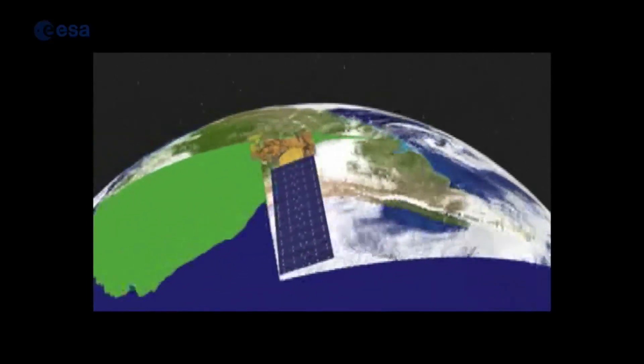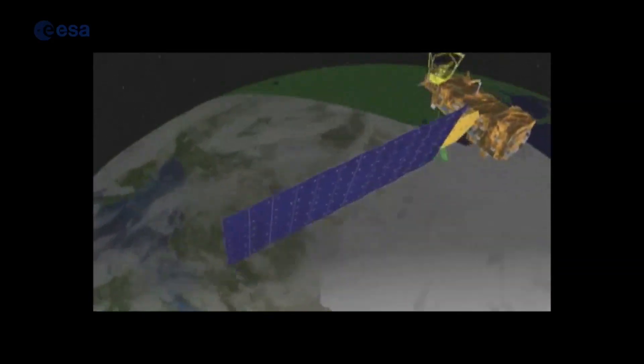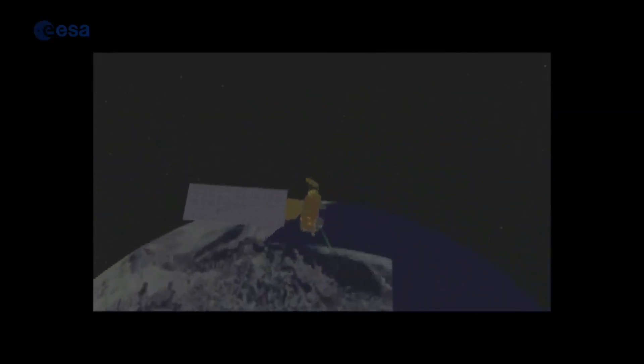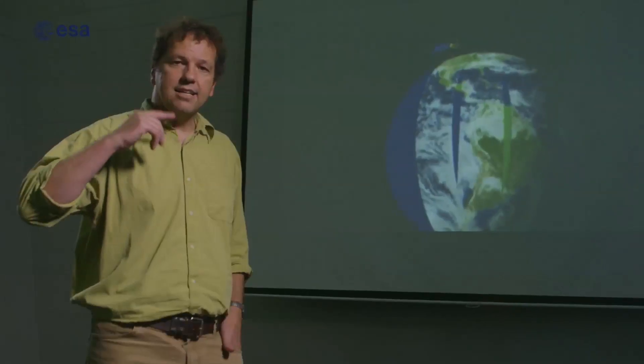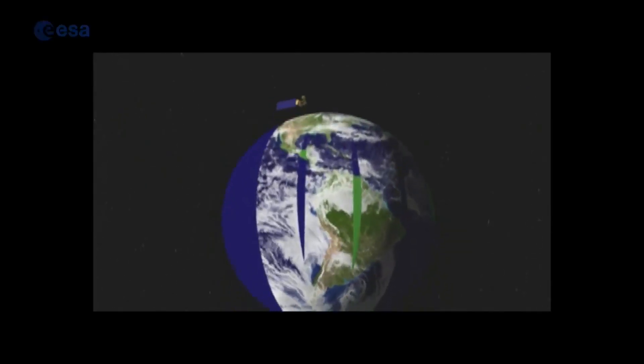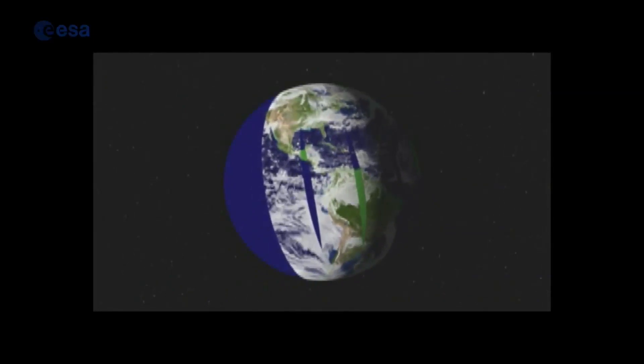They image a swath, a variable width, below the spacecraft with their imaging instruments. So you can see here the NASA Terra satellite, which is imaging a swath of around two and a half thousand kilometers below the satellite. As it's rotating around the Earth, the Earth is rotating below it, and it allows it to cover almost the entire planet every day with imagery.